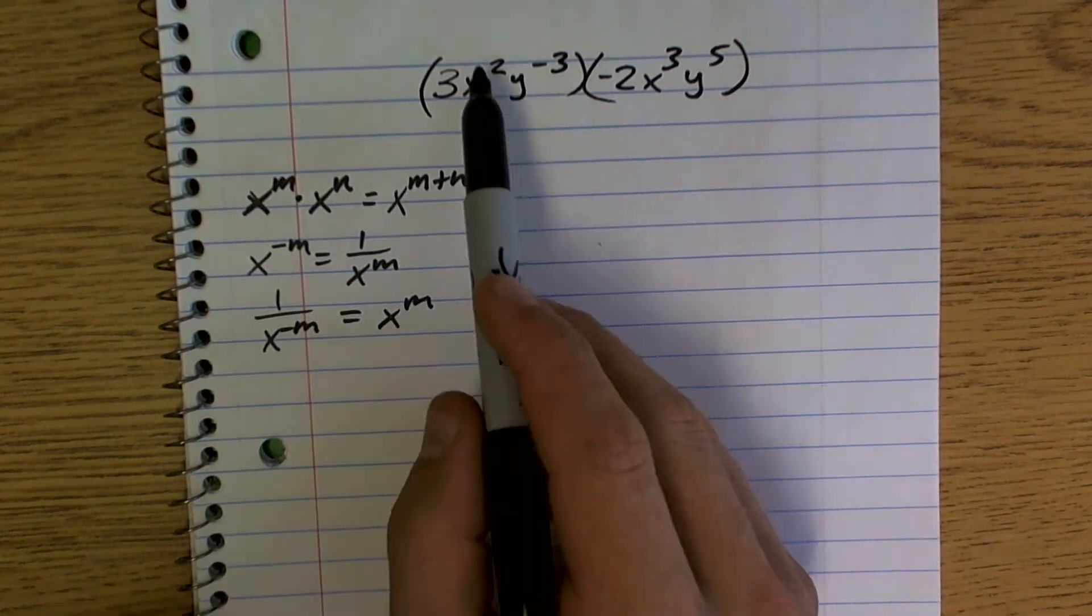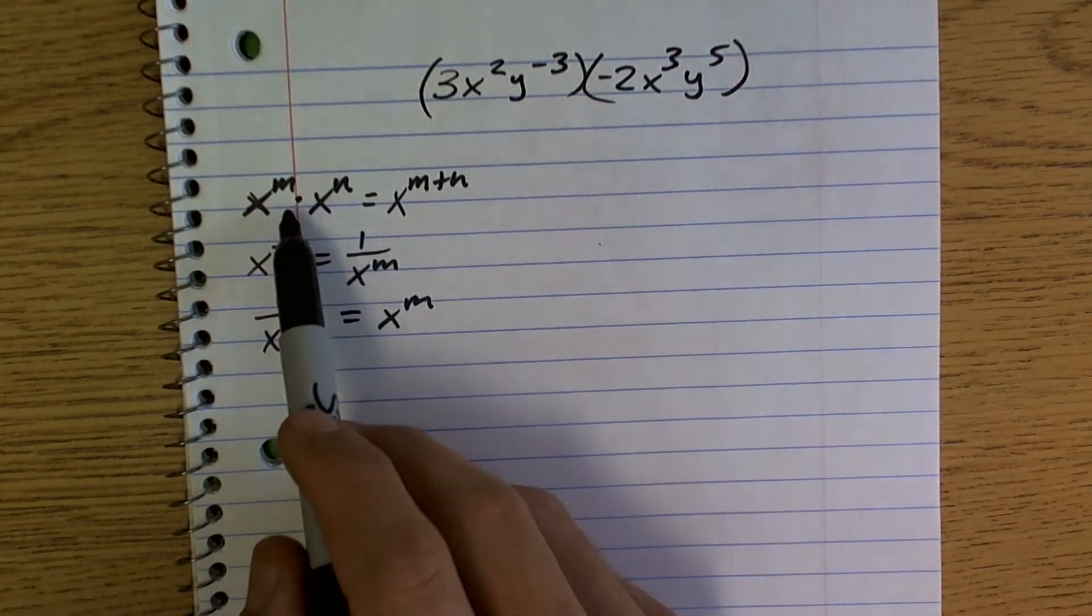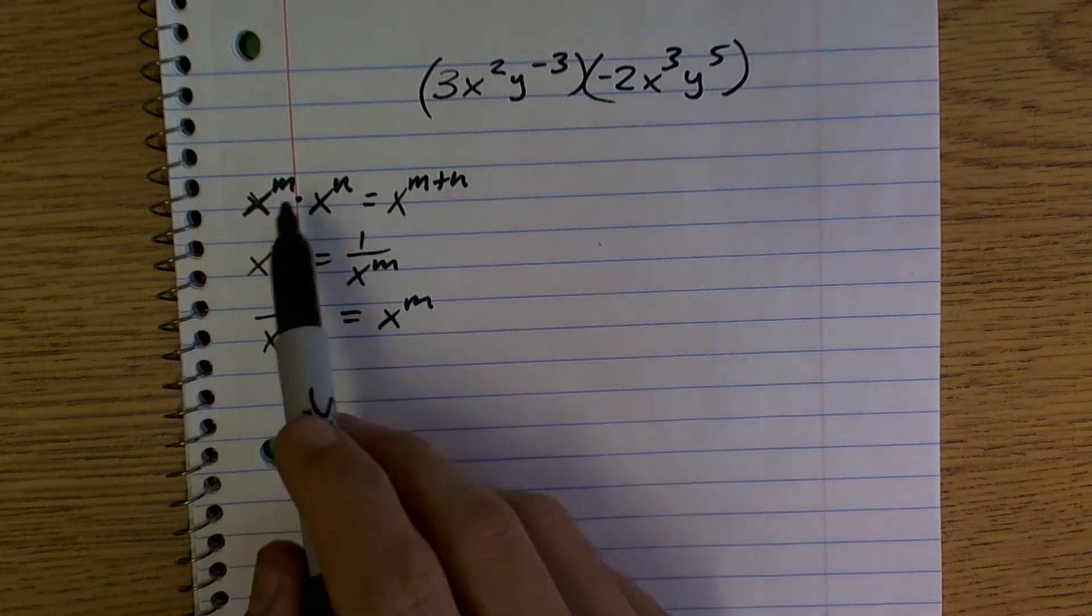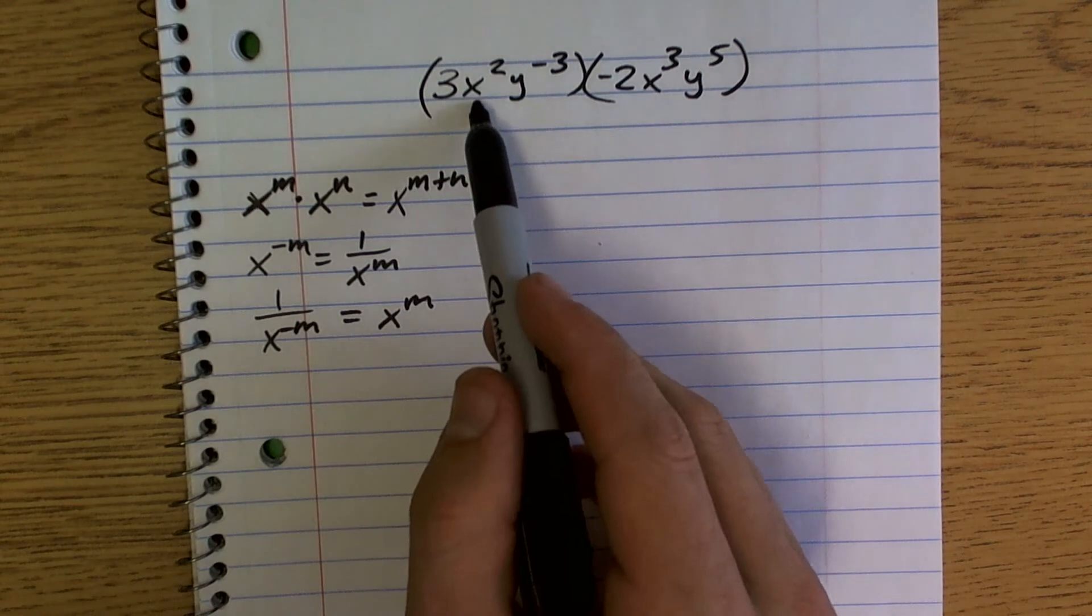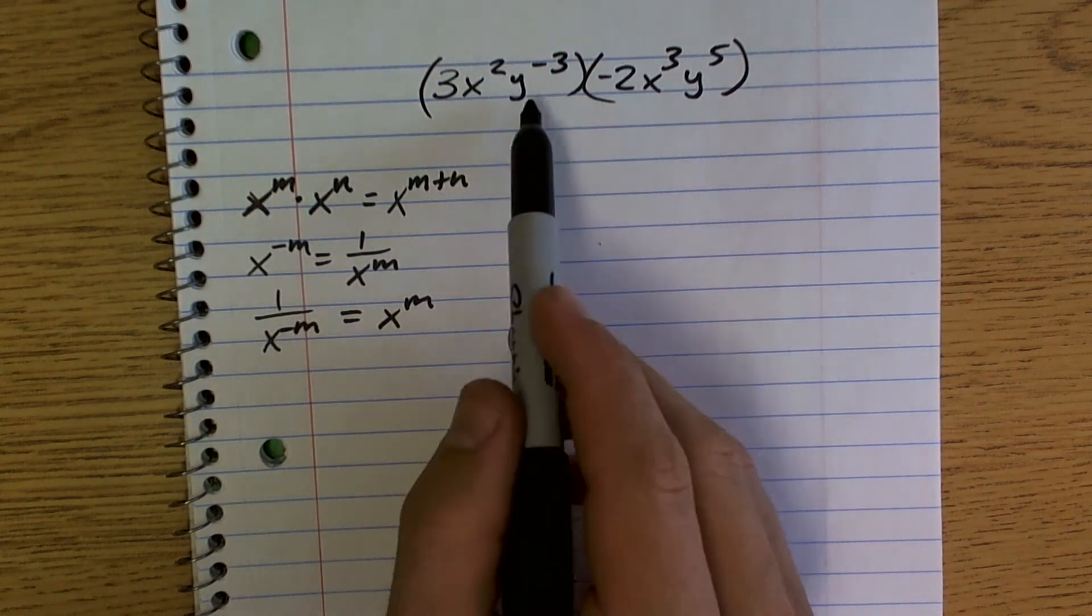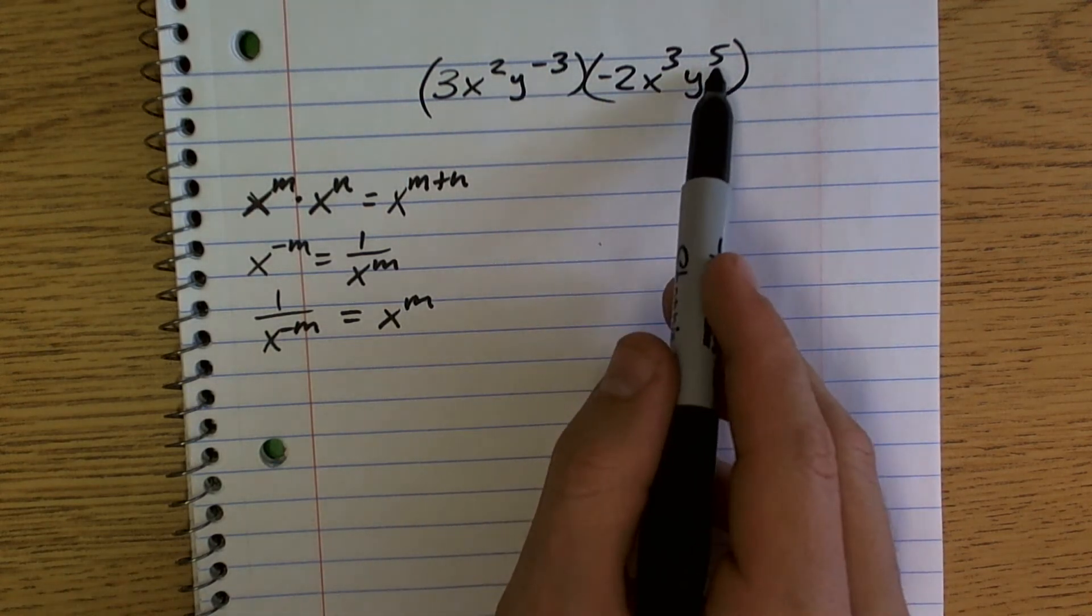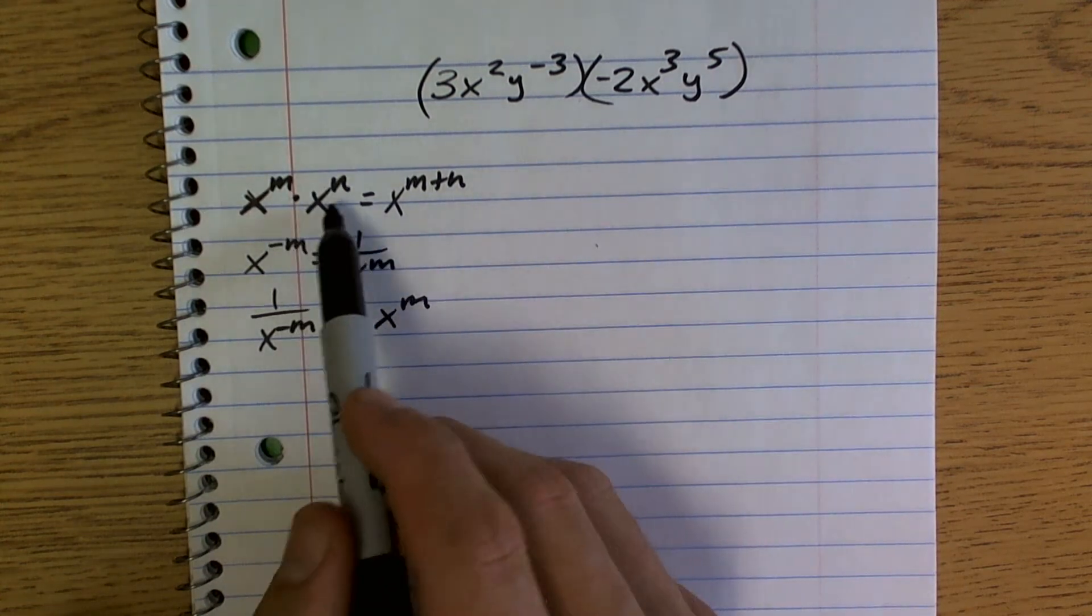So what I'm going to do here is I'm just going to simplify. We can only multiply our exponents when they have the same base. So therefore, I can only multiply an x squared times x cubed and a y to the negative third times y to the fifth. Right? I can only multiply them because they have the same base. Okay?